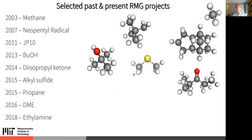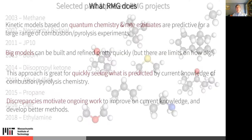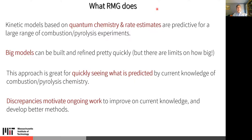We've written many papers about this for many different systems — you can see examples of modeled molecules on the Green Group website. The kinetic models are based on quantum chemistry and rate estimates, and we find they are at least semi-quantitatively predictive for a large range of combustion and pyrolysis experimental data. You can actually predict things before doing the experiments, and the predictions are pretty accurate. We can build pretty large models much faster than by hand, though making the model too large will eventually slow down the computer.